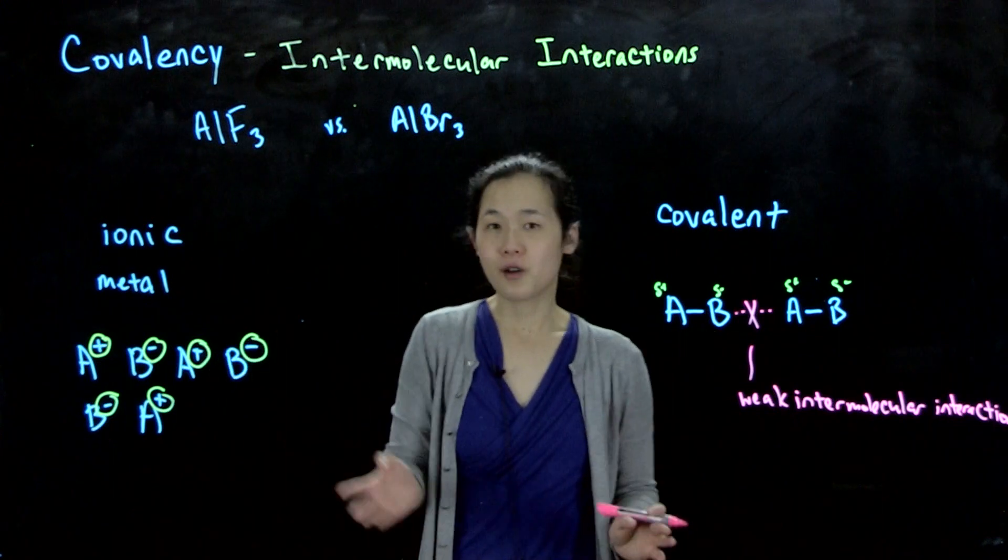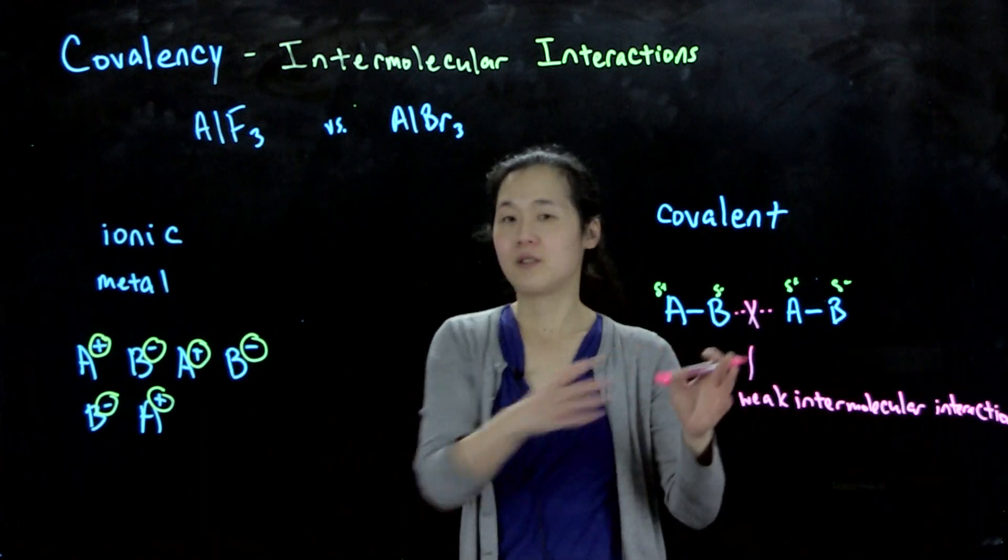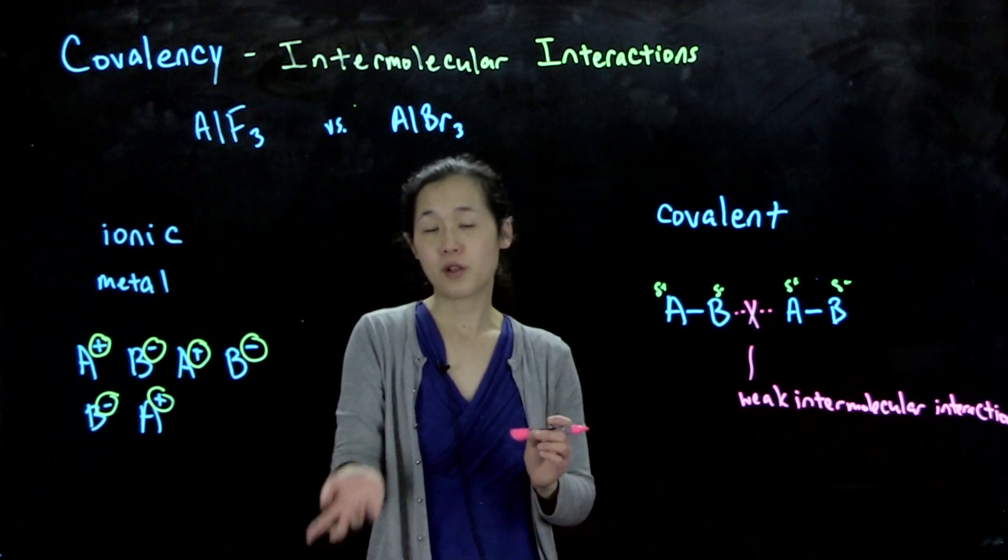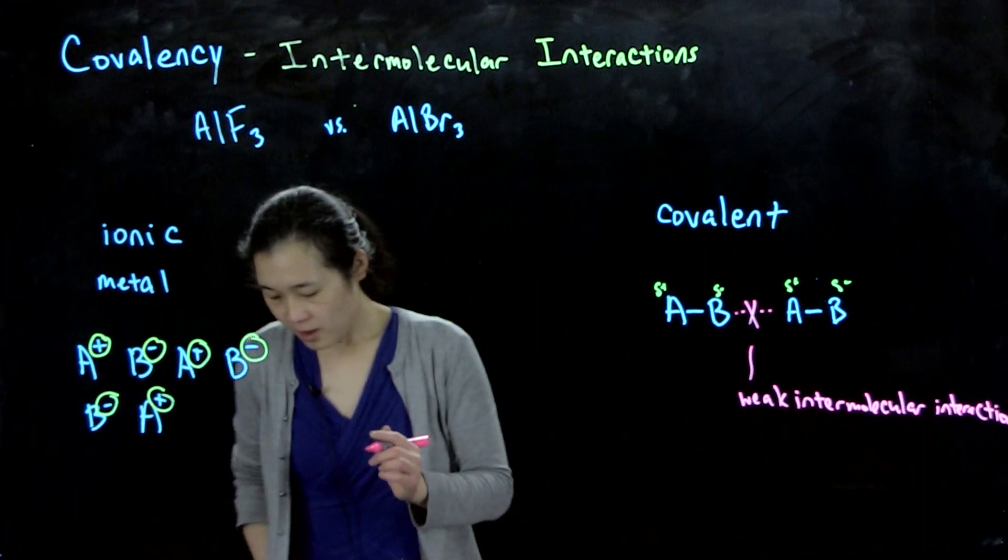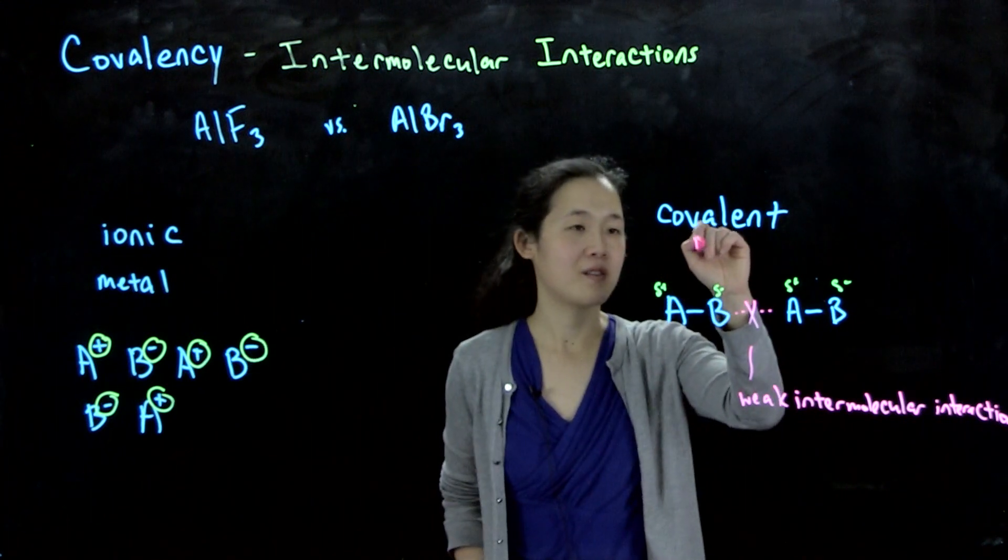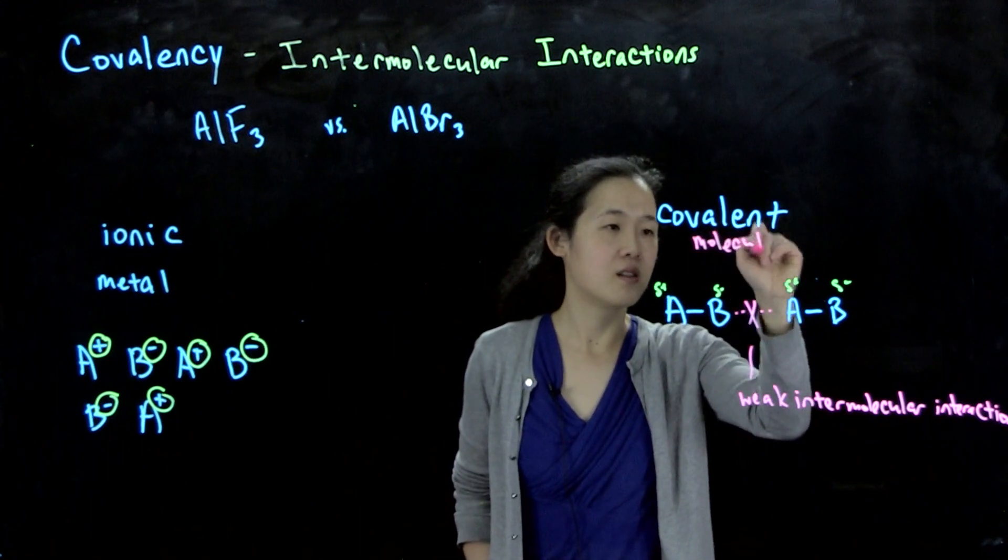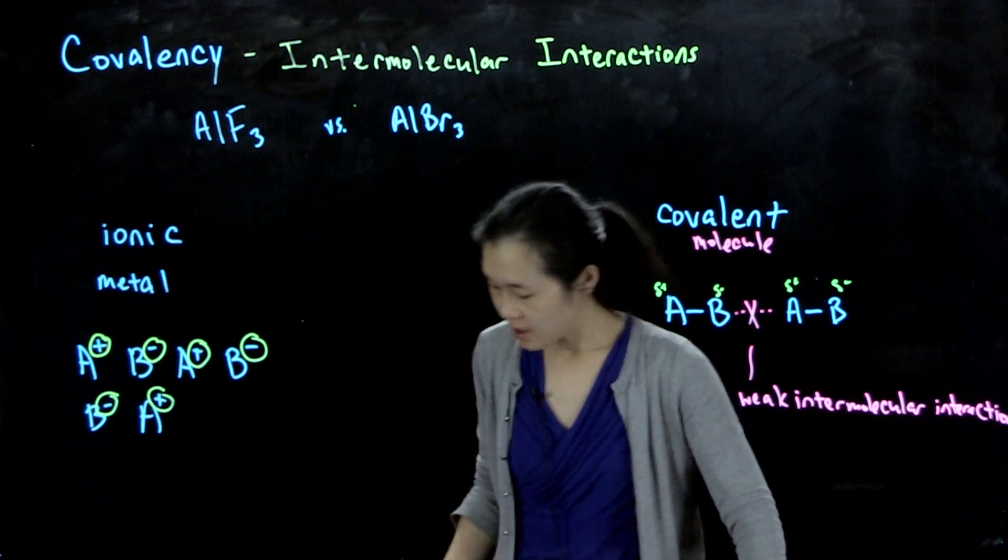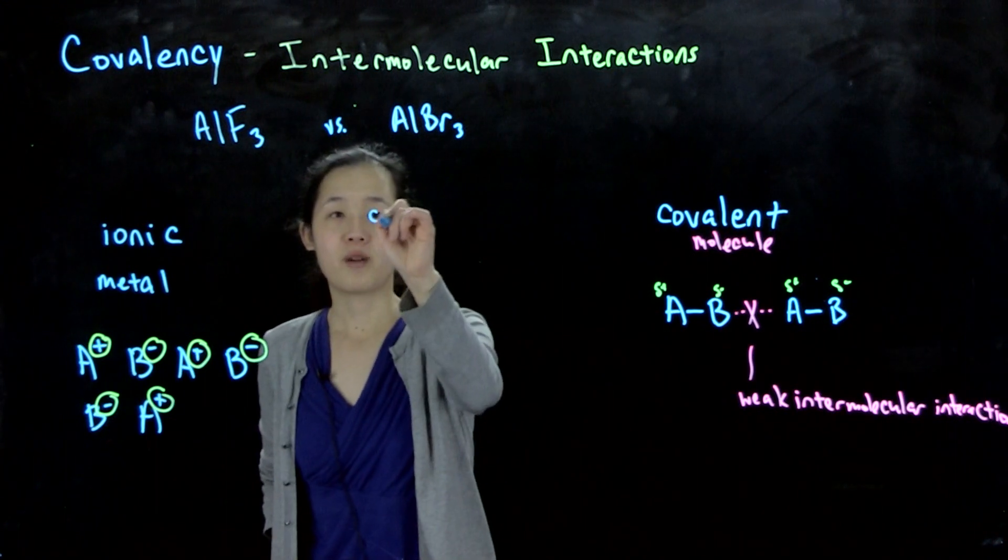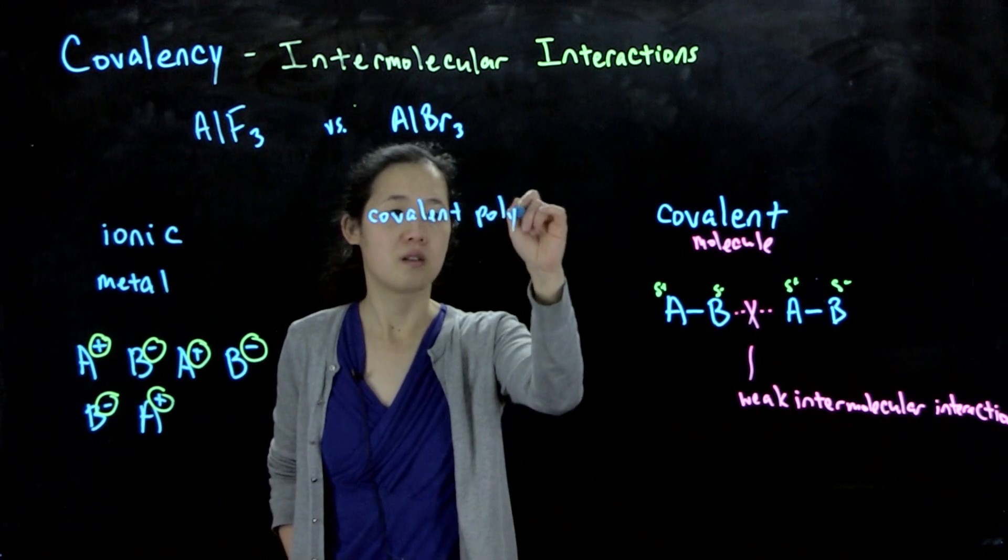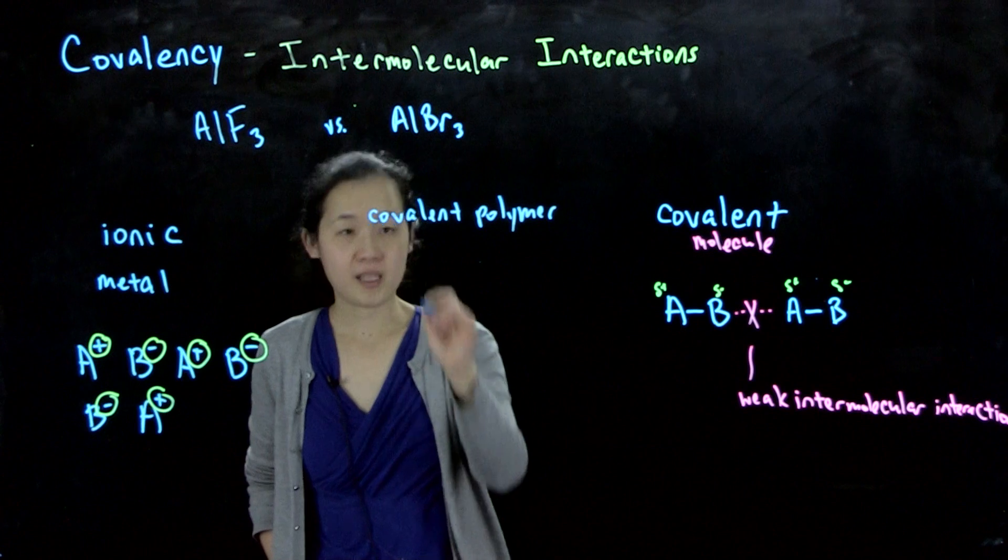But like I said, it's a continuum, so not everything is either a free molecule or a 3D lattice. We mentioned one example which is beryllium chloride, which is a polymer. So we could have some sort of borderline thing. Because we have a continuum of delta chi's for electronegativity, over here we could maybe have a covalent polymer in between. This situation would be kind of borderline.